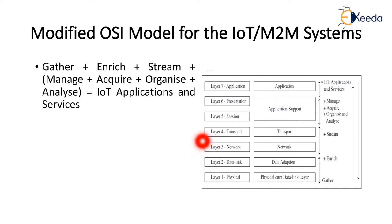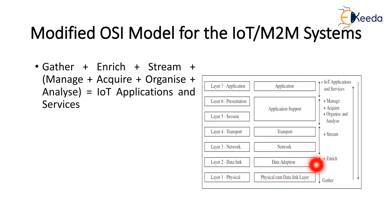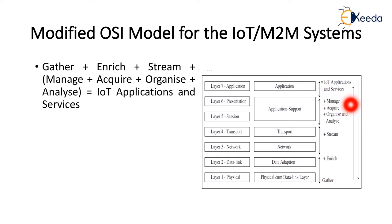The OSI — Open Systems Interconnection — model supports seven basic layers: physical layer, data link layer, network layer, transport layer, session layer, presentation layer, and application layer. The gathering of data occurs at the physical and data link layers, enriching data at the data adoption layer, followed by the network and transport layers. The presentation and session layers provide application support. Data collected is streamed to the network with the help of gateways, and cloud computing takes place at the application support layer — managing, acquiring, organizing, and analyzing data. The application may be Android, a web service, or any software platform.